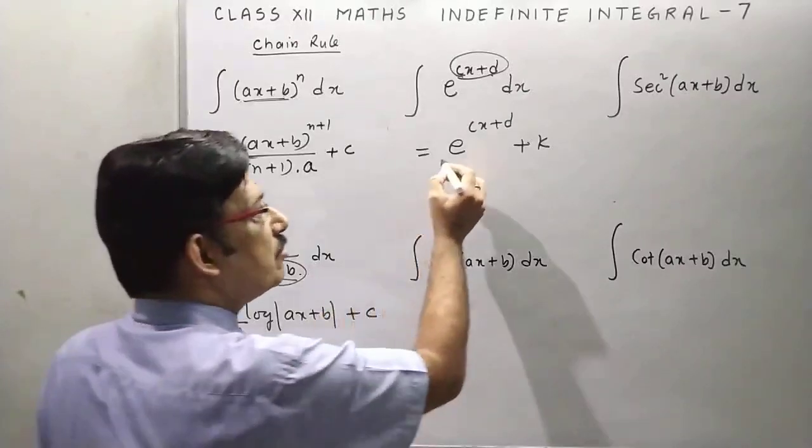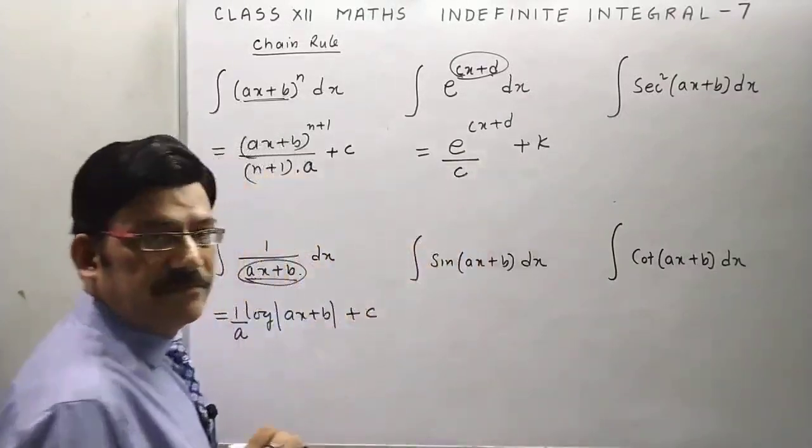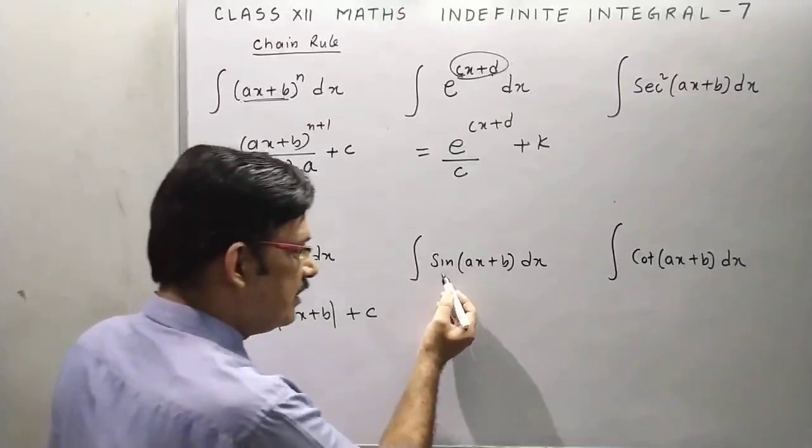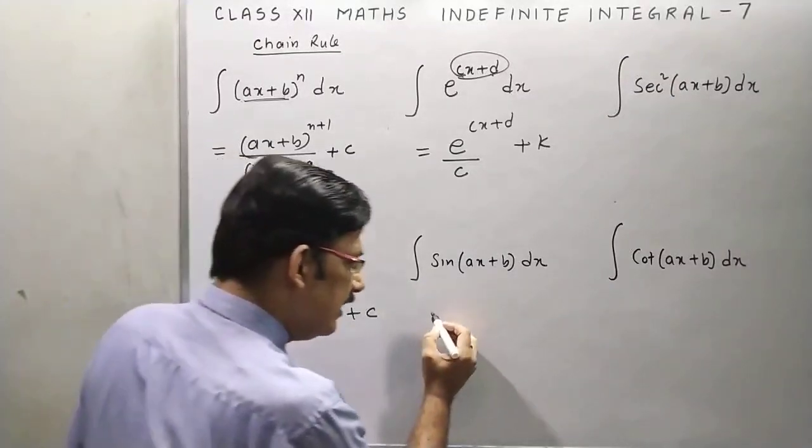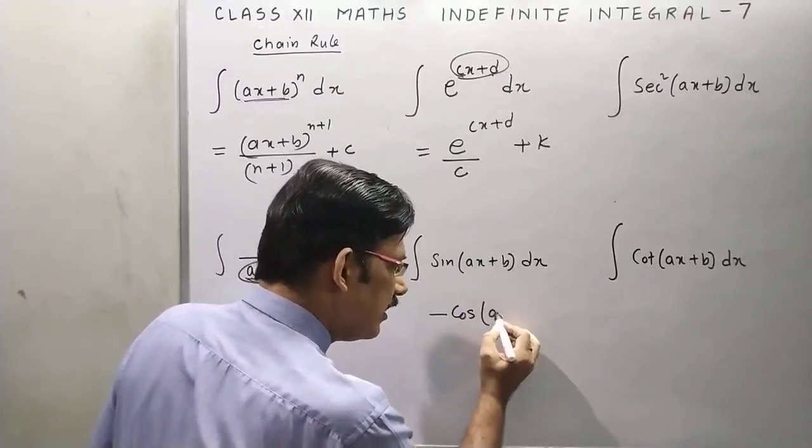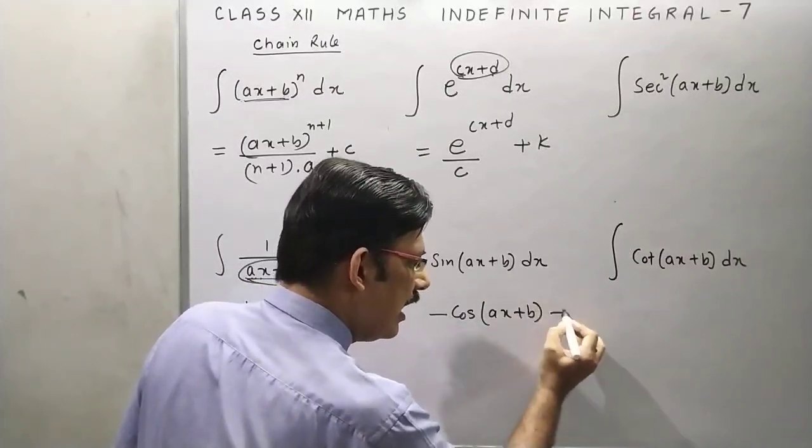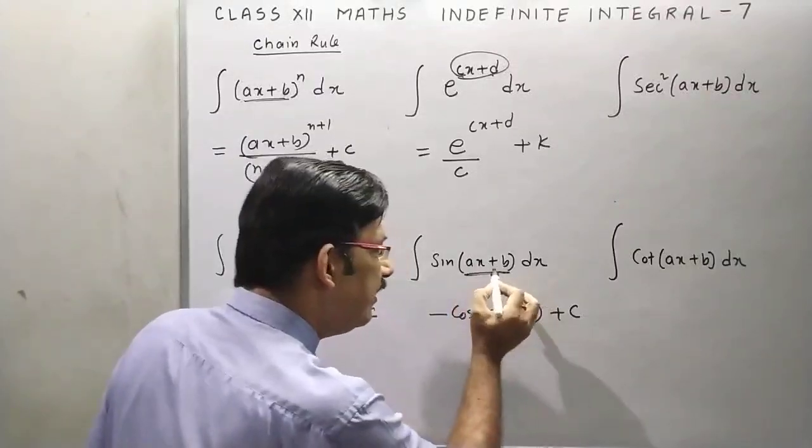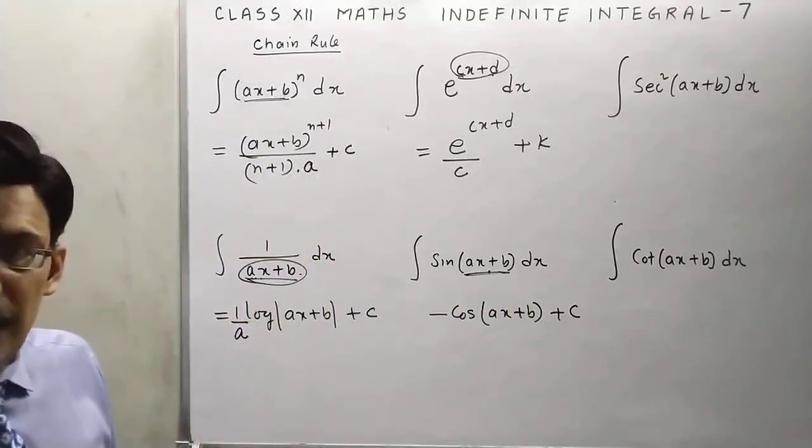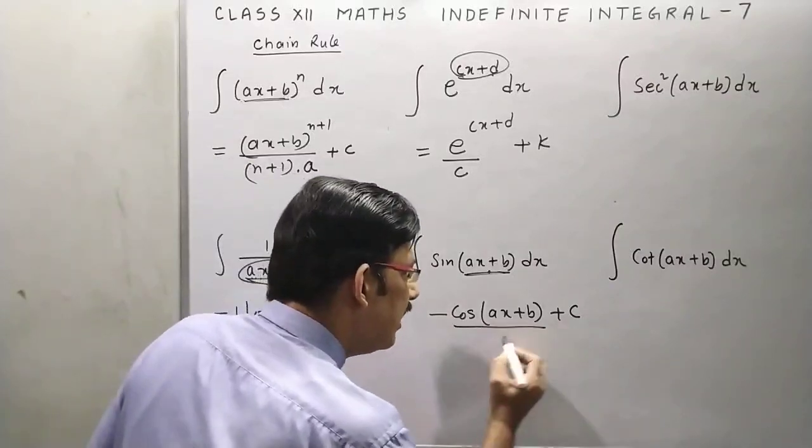And this one is sin(ax + b). We have formula for sin theta, that is minus cos theta, and this is constant of integration. Now you have to divide this by derivative of ax plus b, that is a.